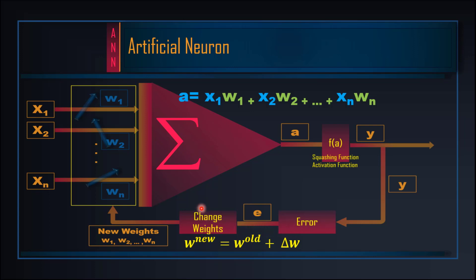We pass the learning rules. The learning rules are of different types for supervised and unsupervised learning. Generally, we choose a small factor which we call delta w. We add delta w to our old weights to get the new updated weights.